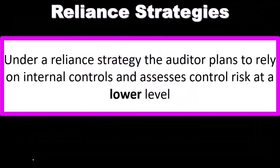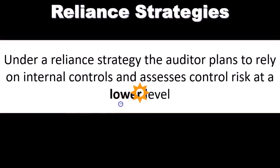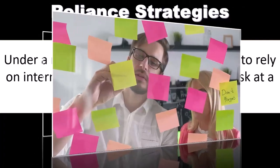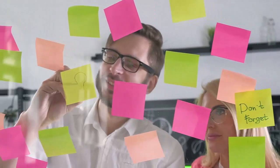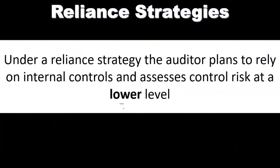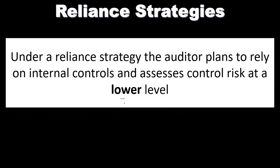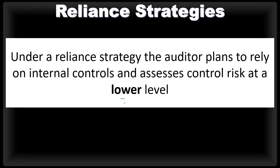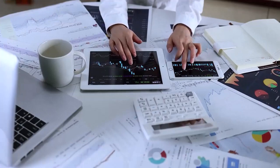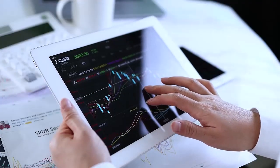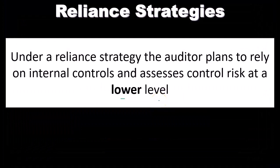Under our reliance strategy, the auditor plans to rely on internal controls and assesses control risk at a lower level. We've looked at internal controls, we have an understanding of them, and therefore we're going to rely on them. We think they're good, and therefore we can rely on internal controls and do less of the actual substantive testing. Assessing control risk at a lower level means the risk of the controls not detecting a material misstatement is low.